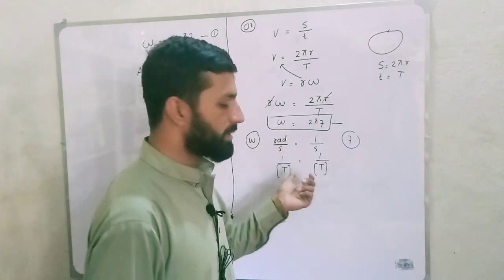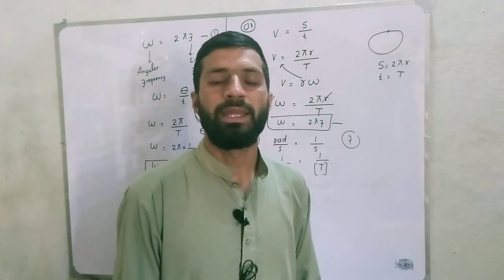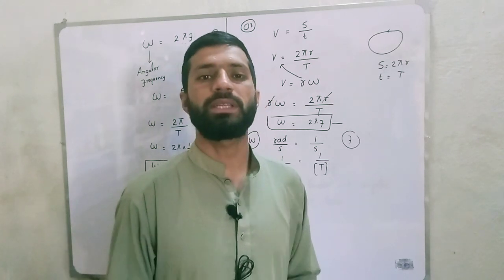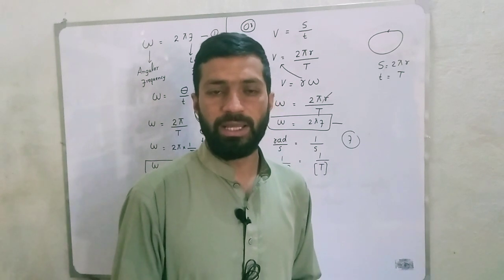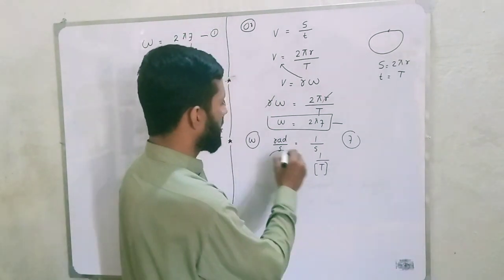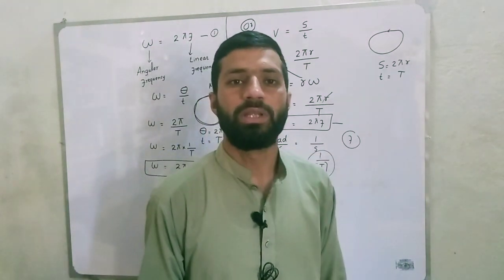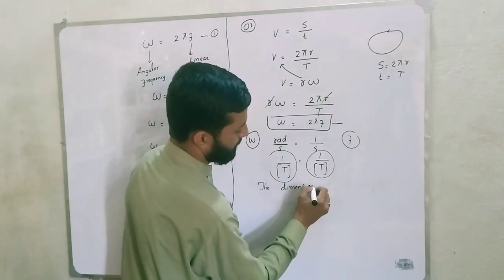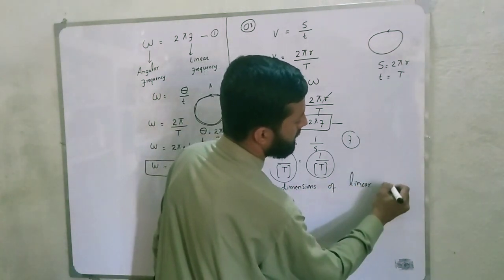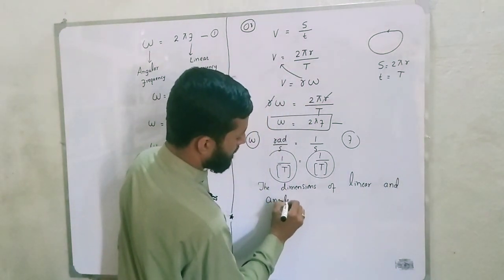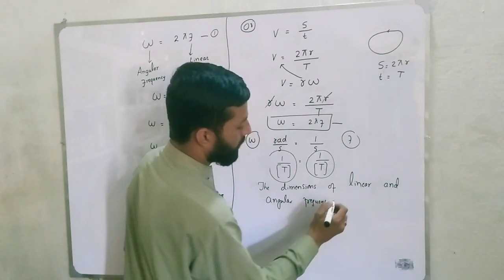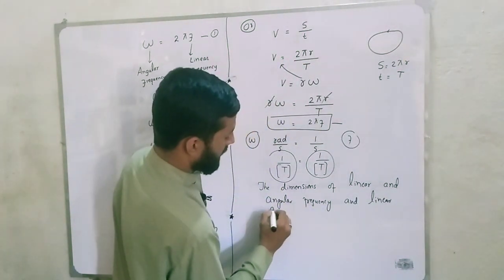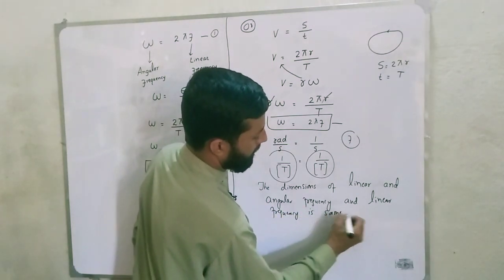As is obvious from this calculation, both the dimension of linear frequency and angular frequency is the same. This equation is also proved by the principle of homogeneity, which states that the dimension of the left-hand side of an equation must equal the right-hand side. Here, both sides have dimension 1 over T, confirming the equation is valid. Angular and linear frequency have the same dimension.